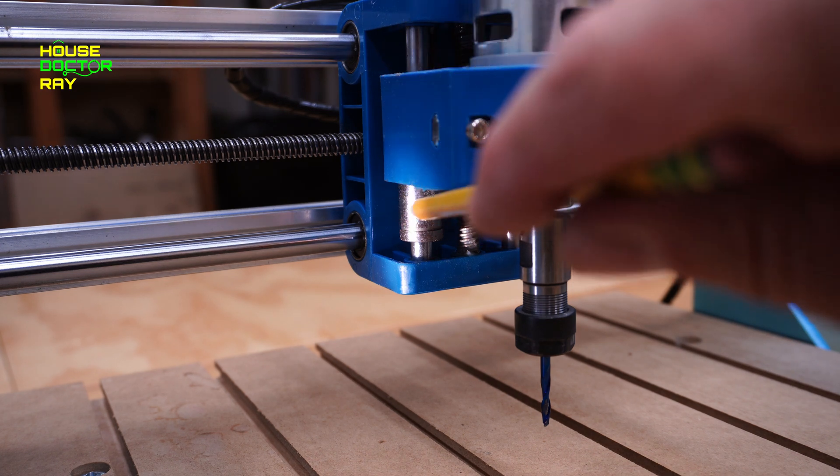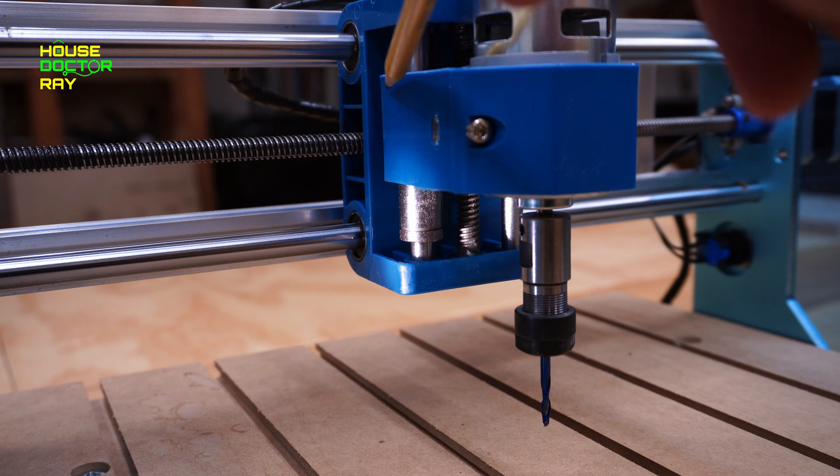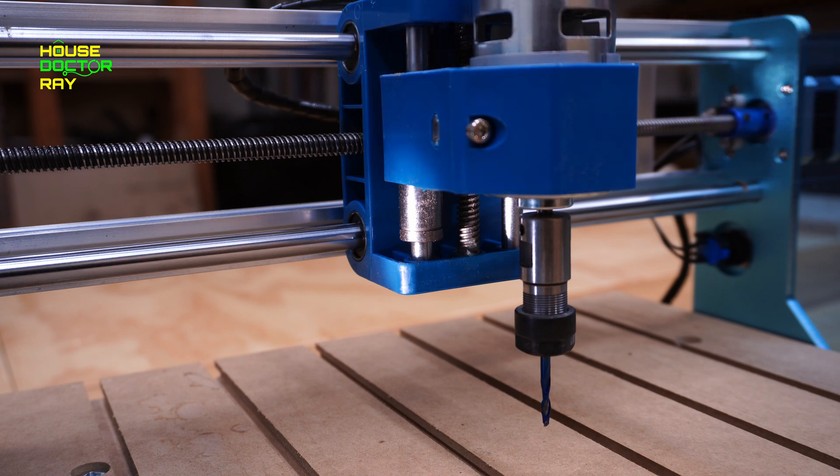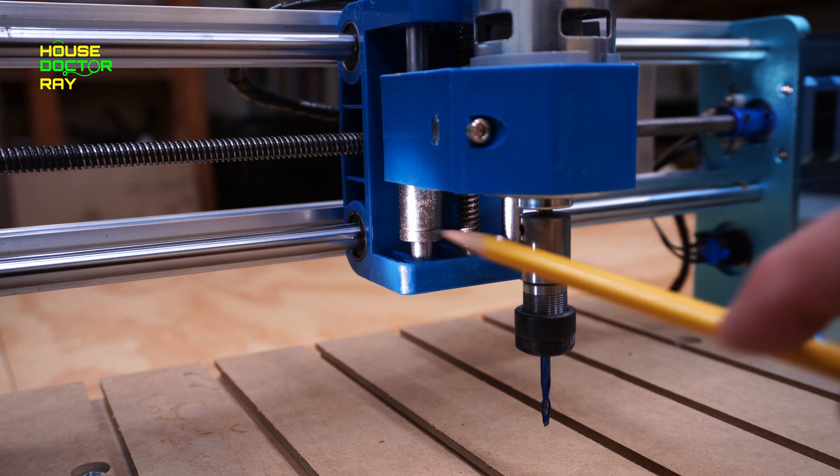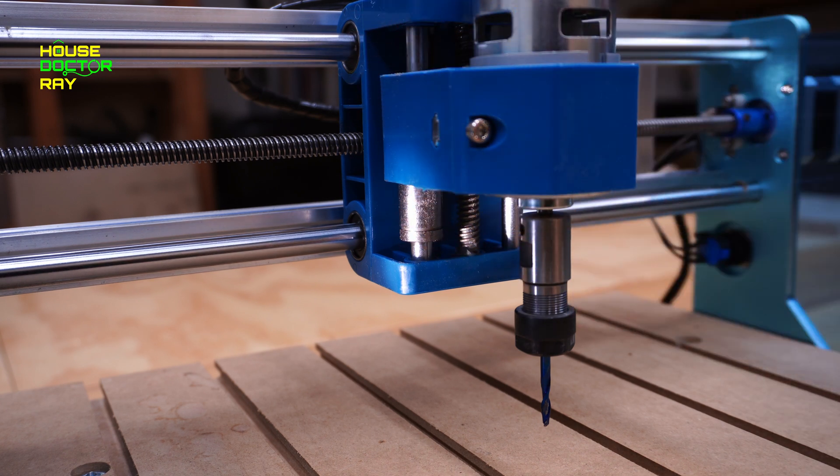Now, on the model I have, I have a single bearing that goes from here to here on the spindle housing. Some of them have a small bearing at the top and at the bottom, so just keep that in mind. You may have two bearings on each side, whereas I only have one.